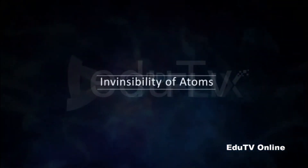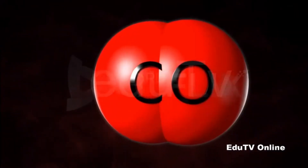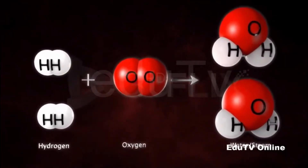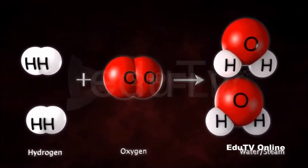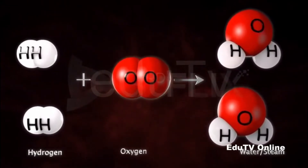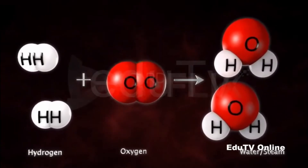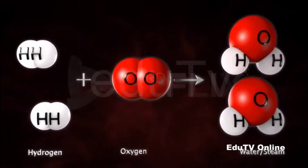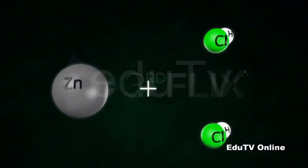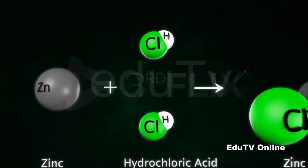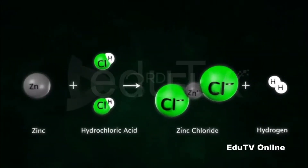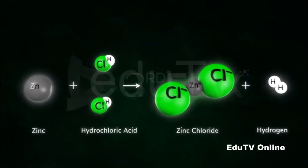Conservation of atoms: Hydrogen reacts with oxygen to form water. There are four atoms of hydrogen and two atoms of oxygen on the reactants side, and the same number on the product side. In another reaction, zinc reacts with dilute hydrochloric acid to form zinc chloride and hydrogen. Both the reactants side and the product side contain the same number of atoms — one atom of zinc and two atoms each of chlorine and hydrogen — making a total of five atoms on both sides of the equation.